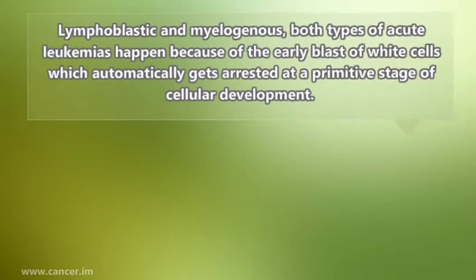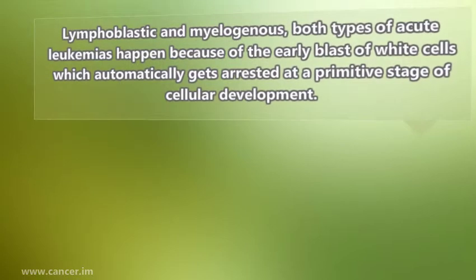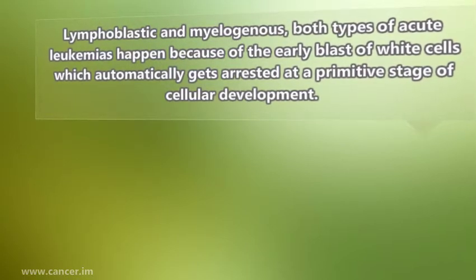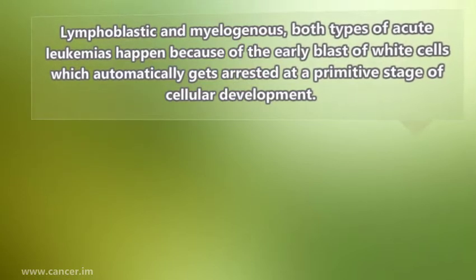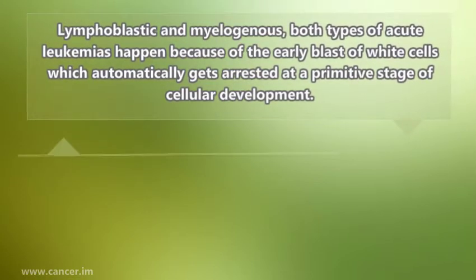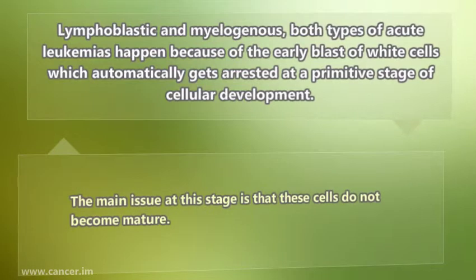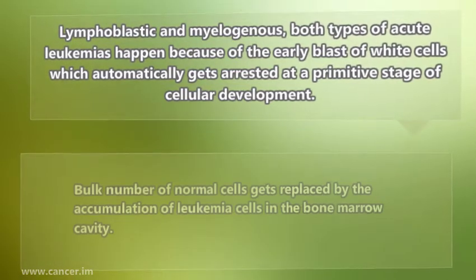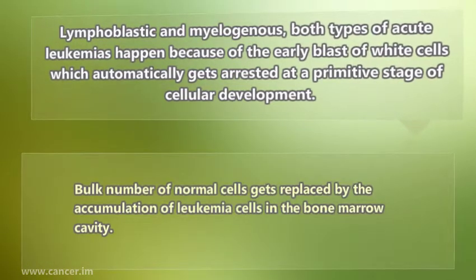Both lymphoblastic and myelogenous types of acute leukemia occur because of the early blast of white cells, which automatically gets arrested at a primitive stage of cellular development. The main issue at this stage is that these cells do not become mature, and the bulk number of normal cells gets replaced by the accumulation of leukemia cells in the bone marrow cavity.